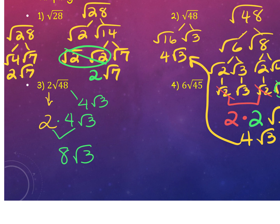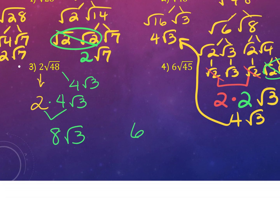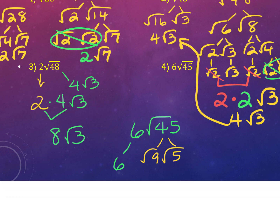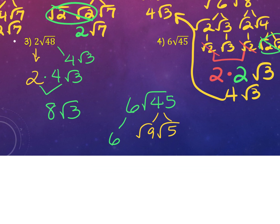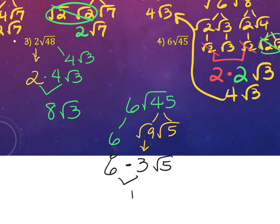For number 4 with 45: do a factor tree. The 6 is already there. For 45, do 9 times 5. If you recognize 9 is a perfect square, just square root it; if not, keep breaking it down until prime. Bring the 6 down, square root the 9 to get 3. The 5 can't be broken down and has no pair. Multiply everything outside the radical and leave the 5 underneath.